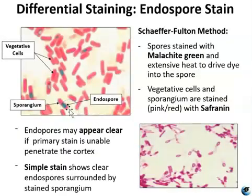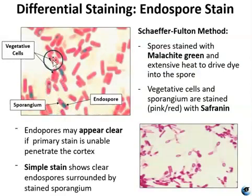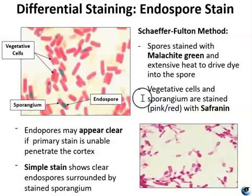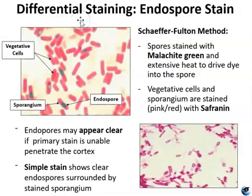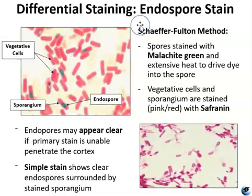Green endospores can appear within the pink sporangium. If no endospores are present, then that is a vegetative cell. Sometimes you can have spores by themselves with no sporangium left. Alternatively, endospores may appear clear if the primary stain was not able to penetrate the cortex — you can see examples where the spore is mostly clear with only some malachite green having gotten in.